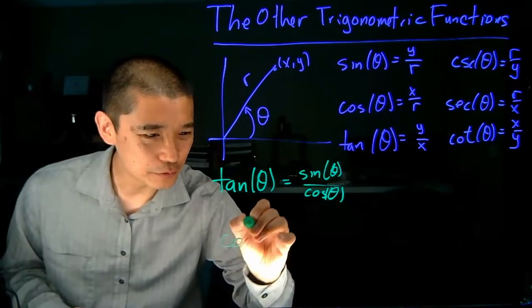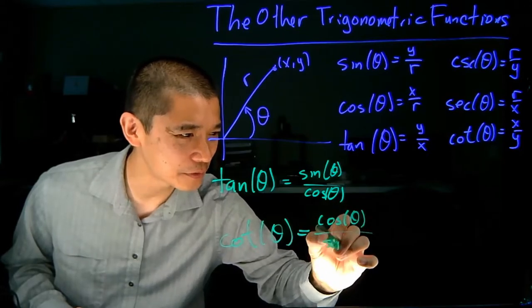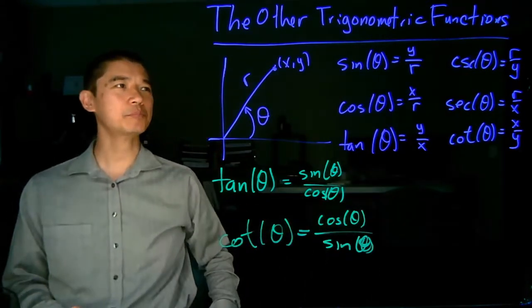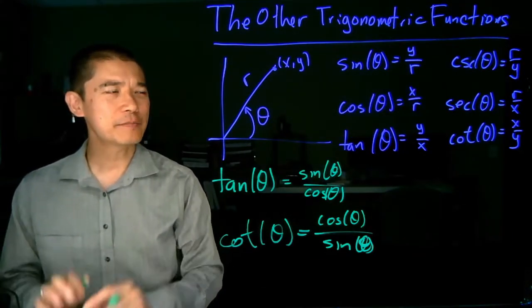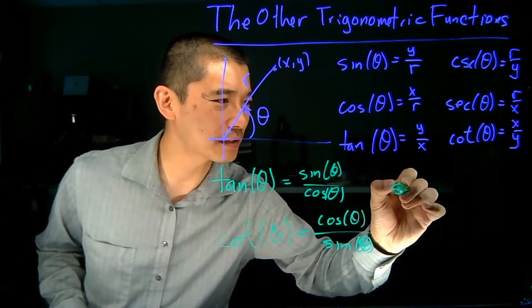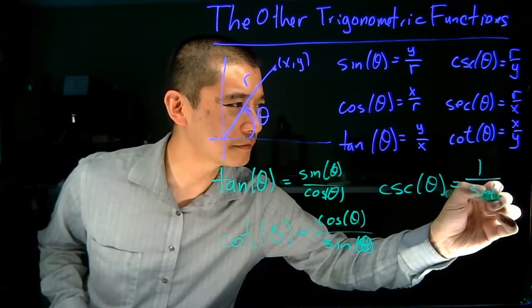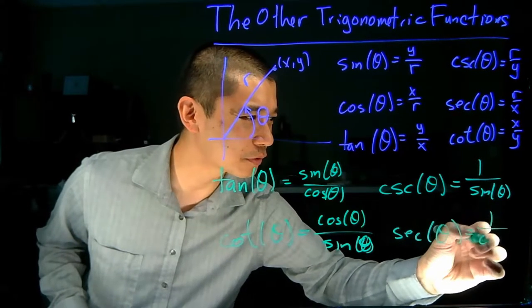Similarly, if we do cotangent of theta, cotangent of theta turns out to be cosine theta over sine theta. These last two, cosecant and secant, they end up just being reciprocals of sine and cosine. So the cosecant theta is 1 over sine theta, and secant theta is 1 over cosine theta.